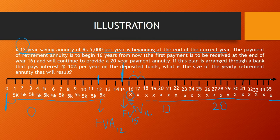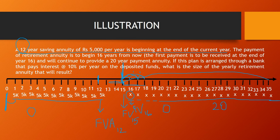To solve this, we convert all future retirement payments into present value at year 15. The amount received at the end of year 16 is discounted 1 year back to year 15; year 17 is discounted 2 years; year 18 is discounted 3 years, and so on. The last installment at the end of year 35 is discounted 20 years back to year 15. So we need to calculate the present value of annuity for 20 years at year 15.